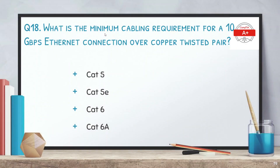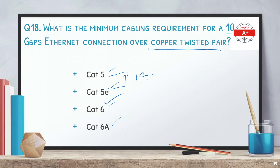Question 18: what is the minimum cabling requirement for a 10 Gbps internet connection over copper twisted pair? Options are Cat 5, Cat 5e, Cat 6, and Cat 6a. The correct answer is Cat 6a. Cat 5e and Cat 5 support up to a maximum of 1 Gbps, while for 10 Gbps you need a minimum of Cat 6, and Cat 6a also supports 10 Gbps or even more.